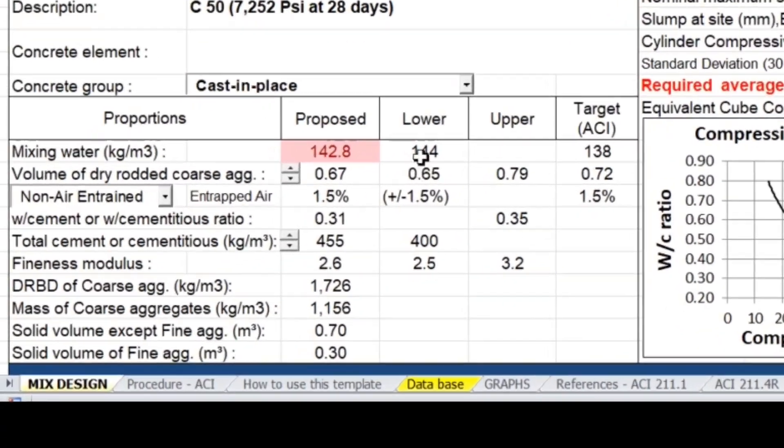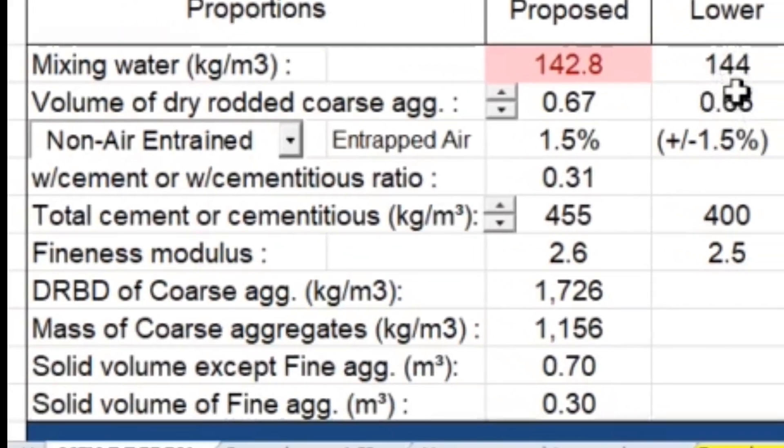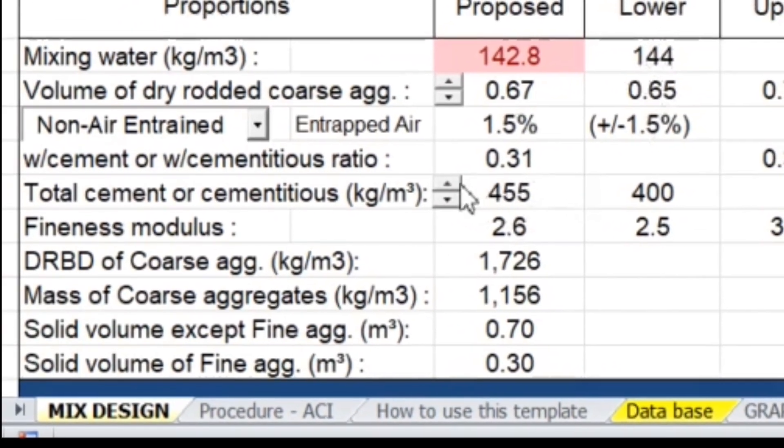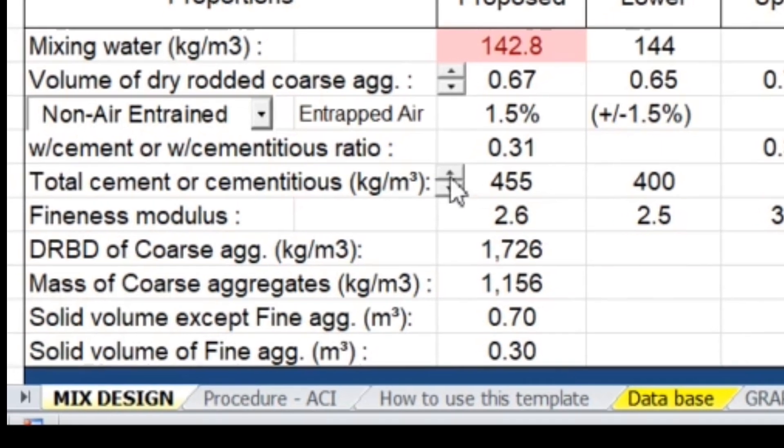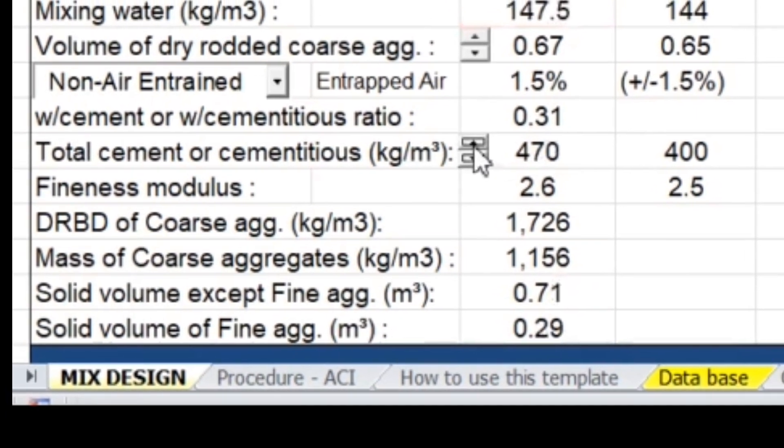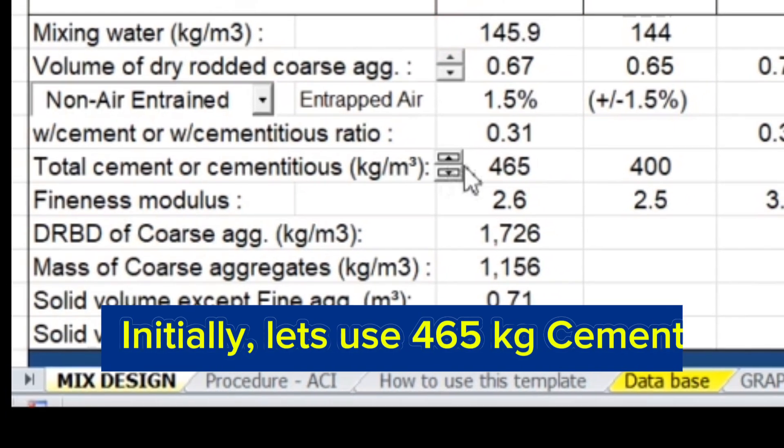Now reference to ACI guidebook, I have to use at least 144 kilos of water due to voids of the sand, so to do that, I have to adjust this cement content. Let's say only 465 kg.